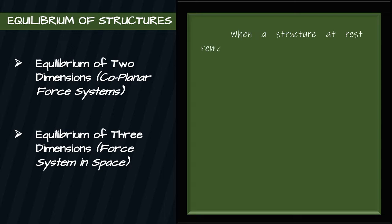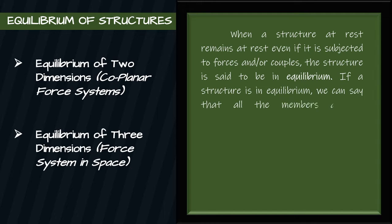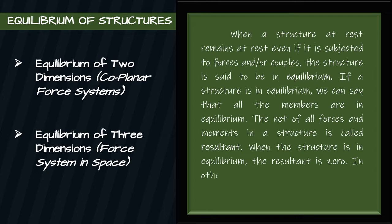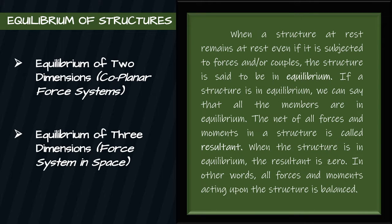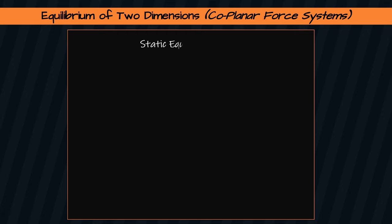A structure at rest that remains at rest even when subjected to forces and/or couples is said to be in equilibrium. If a structure is in equilibrium, all its members are also in equilibrium. The net of all forces and moments in a structure is called the resultant. When the structure is in equilibrium, the resultant is zero — in other words, all forces and moments acting upon the structure are balanced. For a structure subjected to forces and couples lying on the XY plane, it must satisfy the following three static equilibrium conditions.